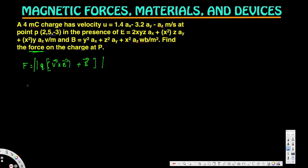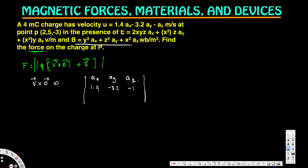To find v cross B, we use the determinant method. We set up the 3x3 determinant with row one as ax, ay, az; row two as the v components: 1.4, -3.2, -1; and row three as the B components: y², z², x².